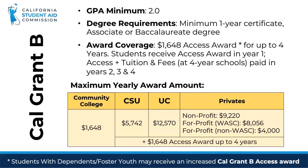Cal Grant B awards have a minimum GPA requirement of 2.0 and have lower income and asset requirements than the Cal Grant A. This award is for lower income students and provides them with a living allowance called an access award, as well as assistance with tuition and fees.